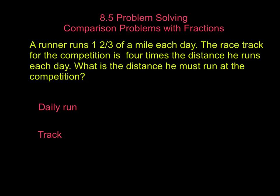A runner runs one and two-thirds of a mile each day. The racetrack for the competition is four times the distance he runs each day. What is the distance he must run at the competition?